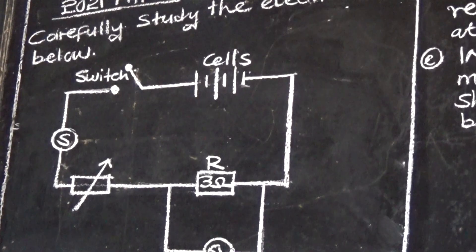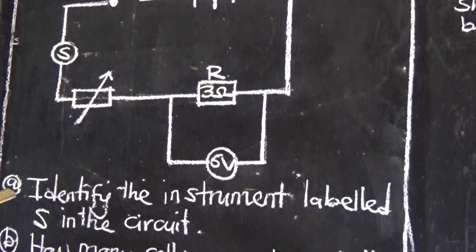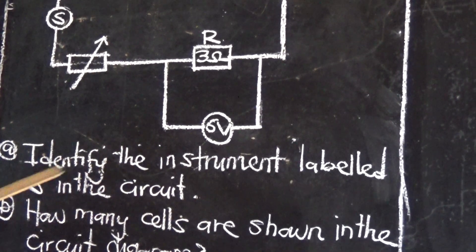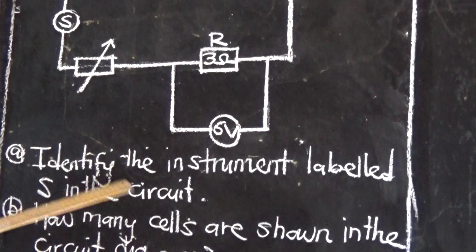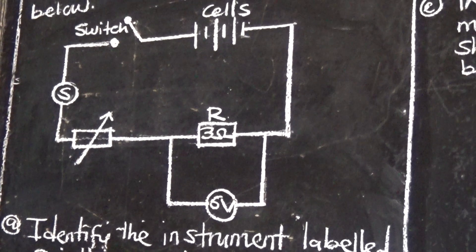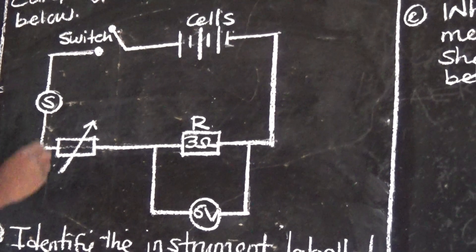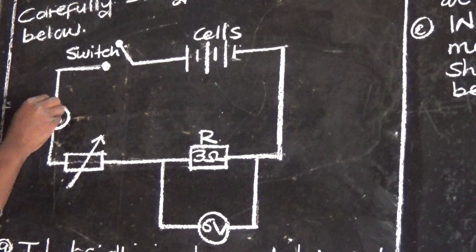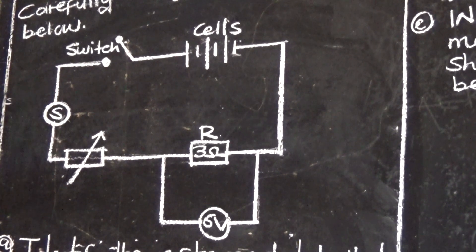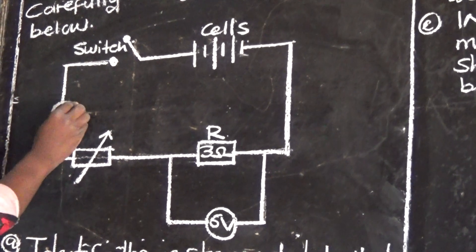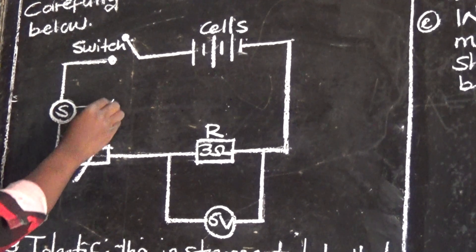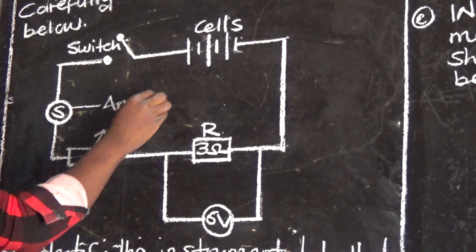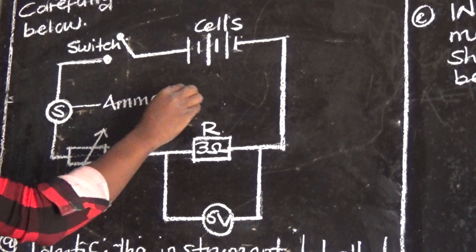The first question says: identify the instrument labeled S in the circuit. So the instrument labeled S — this is the instrument. They want us to name this instrument. Now this instrument is called an ammeter.